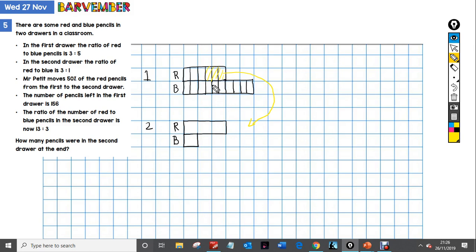What else am I told? The number of pencils left in the first drawer is 156. So let's have a look. This is what's left in the first drawer, and the total of that is 156. I've got all these equal size portions. So we've got 2, 4, 6, 8, 10, 12, 13. So 156 divided by 13, and that means that each of these portions has a value of 12. So each of these is 12.